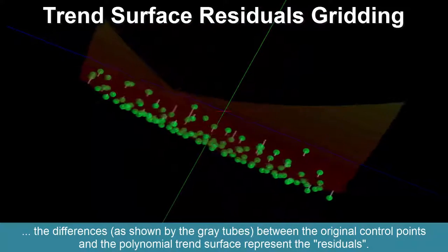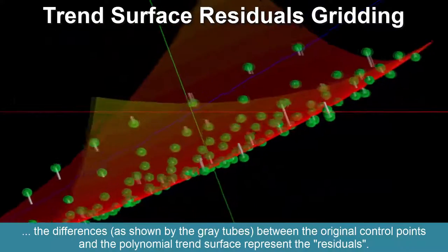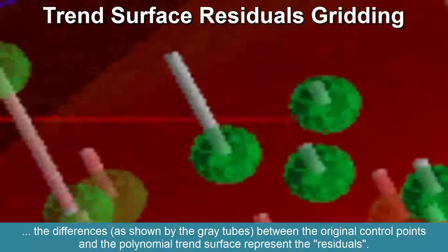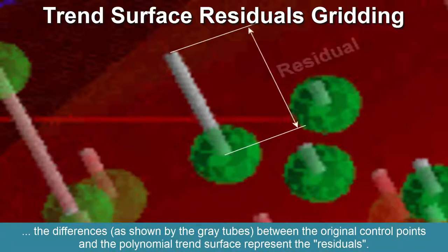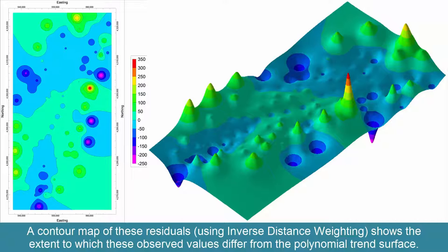the differences, as shown by the gray tubes between the original control points and the polynomial trend surface, represent the residuals. A contour map of these residuals using inverse distance weighting shows the extent to which these observed values differ from the polynomial trend surface.